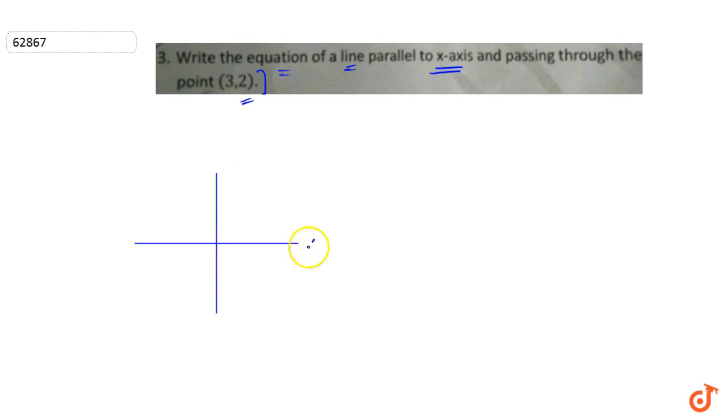So this is our graph, this is x-axis, this is y-axis and we have to say that any line that is parallel to x-axis and it is passing through a point (3,2).